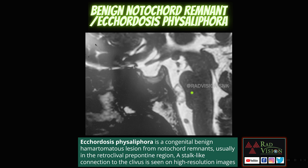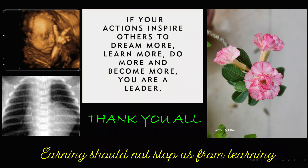Here you can see a cystic lesion in the retroclival region causing indentation over the brainstem in the midline. Whenever you see hyperintense cystic lesions in the retroclival region causing indentation over the brainstem, connected to the clivus via a small stalk seen on high-resolution images, definitely suspect benign notochordal remnant — previously called echordosis physaliphora. The common differentials are benign notochordal cell tumors and chordomas. Thank you all.